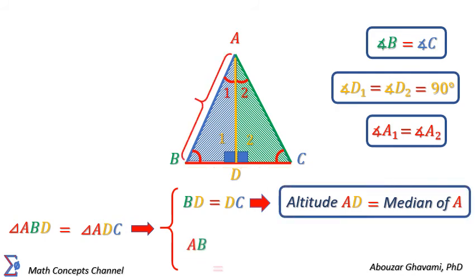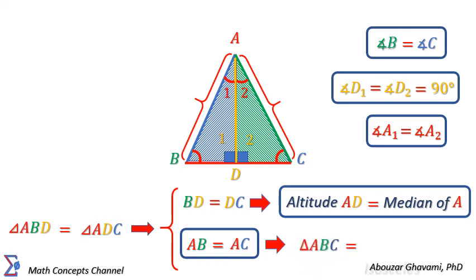And finally, hypotenuse AB is equal to hypotenuse AC. That shows triangle ABC is isosceles.